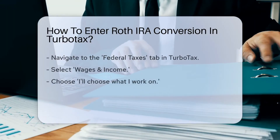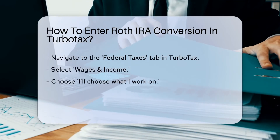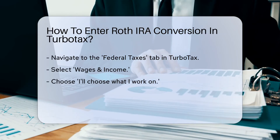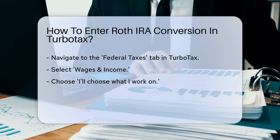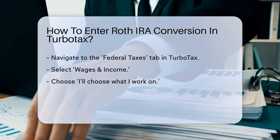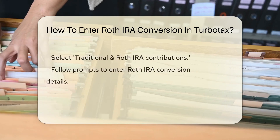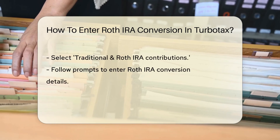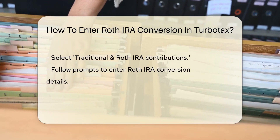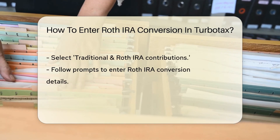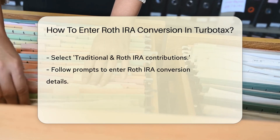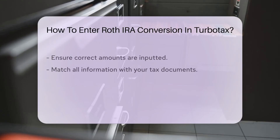A Roth IRA Conversion is reported in TurboTax by navigating to the Federal Taxes tab, then Wages and Income, and selecting I'll Choose What I Work On. Next, choose Traditional and Roth IRA Contributions, and follow the prompts to enter the conversion details accurately.